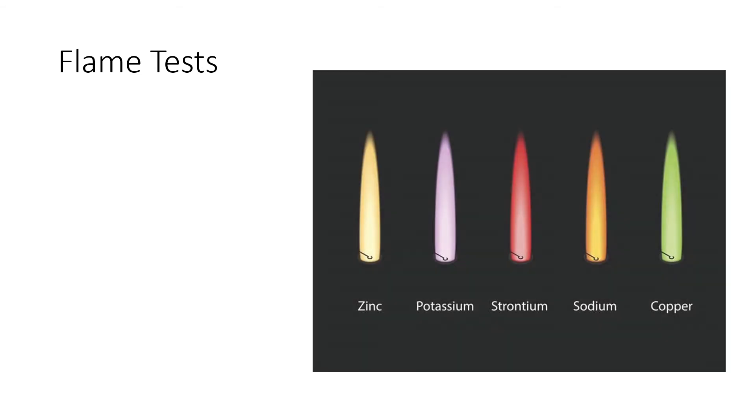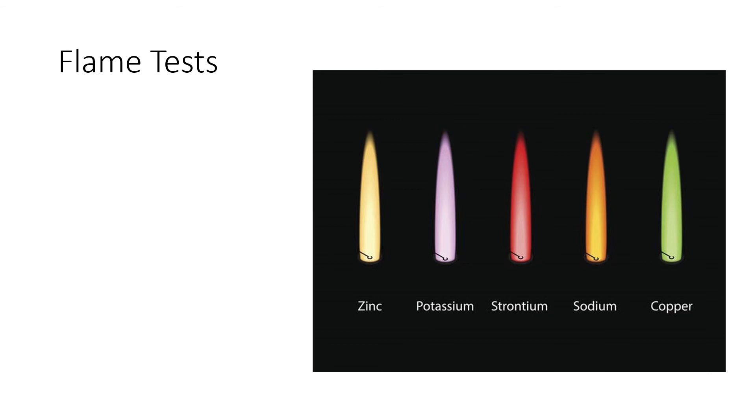The other test we're going to do is a flame test. As we explained in the procedures video that you'll watch later on, substances that have ions in them have their electrons arranged in certain ways by different energy levels. When you provide outside energy, for example, in the form of heat, they absorb some of that energy and then they release it in the form of light. Because of the different arrangements of electrons, the color of light that is emitted is different depending on the substance. Here's an example of some flame tests for different metal ions: zinc, potassium, strontium, sodium, and copper. You can see the different colors that the flames have whenever they burn one of these ions.